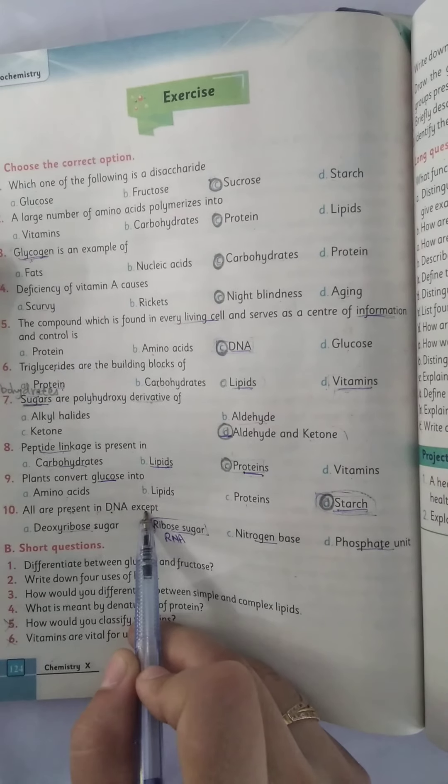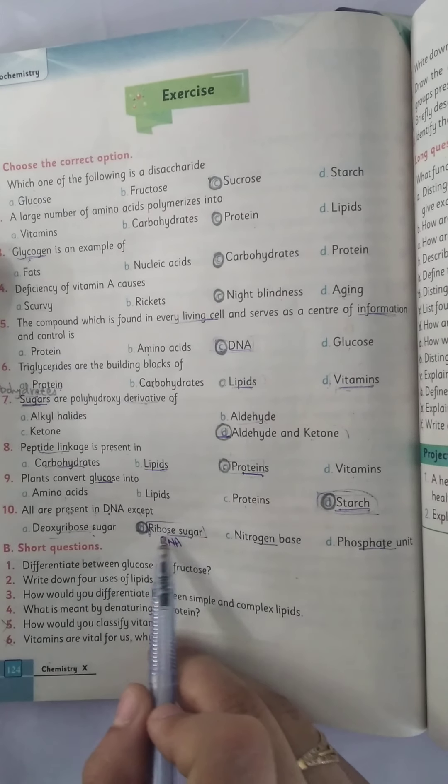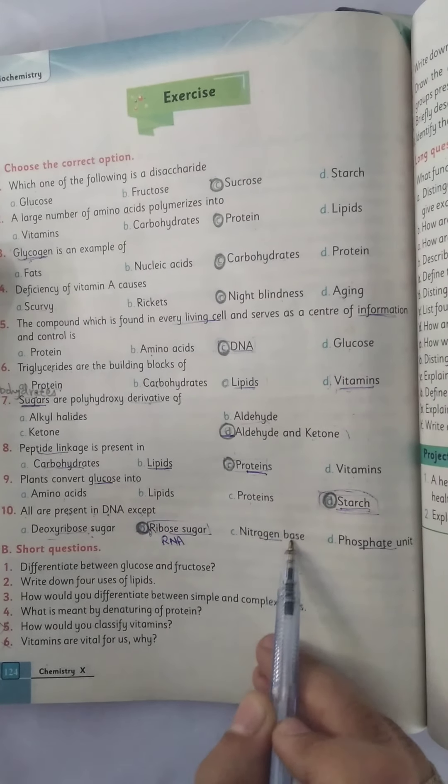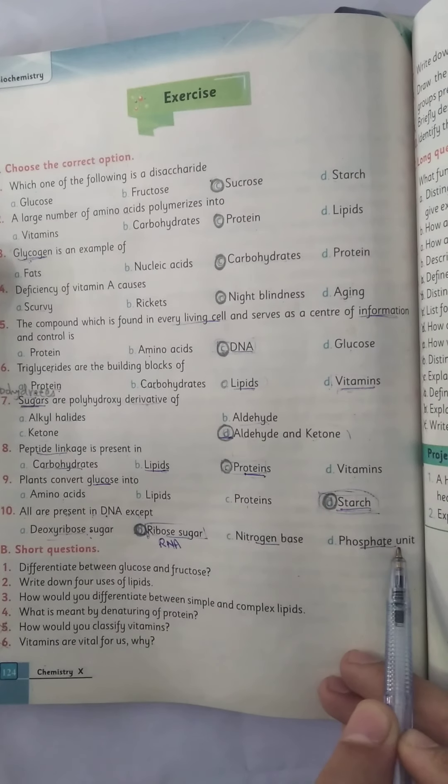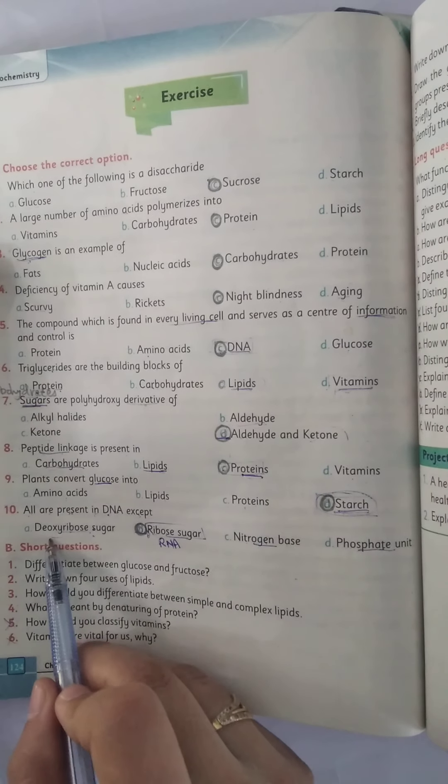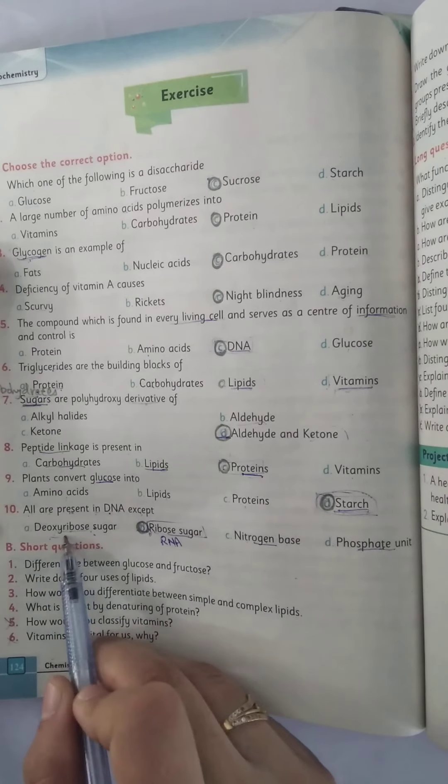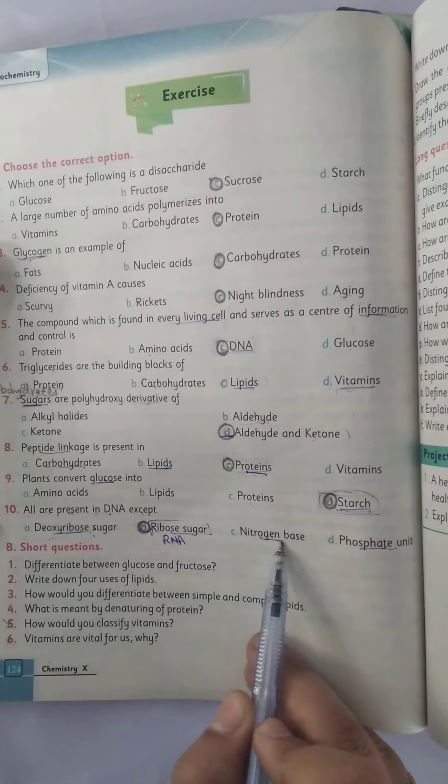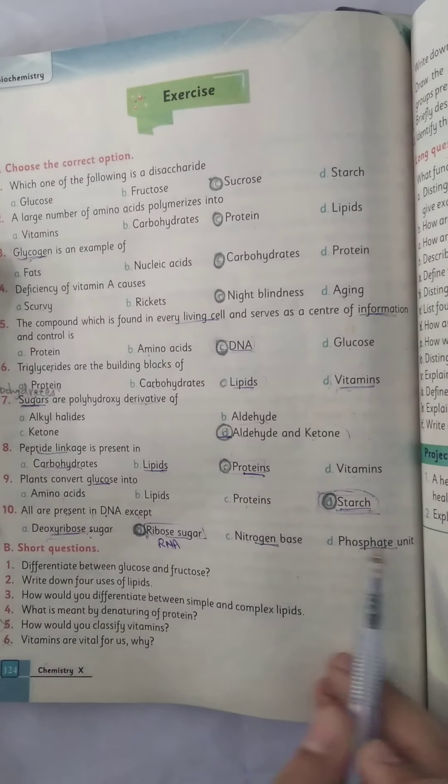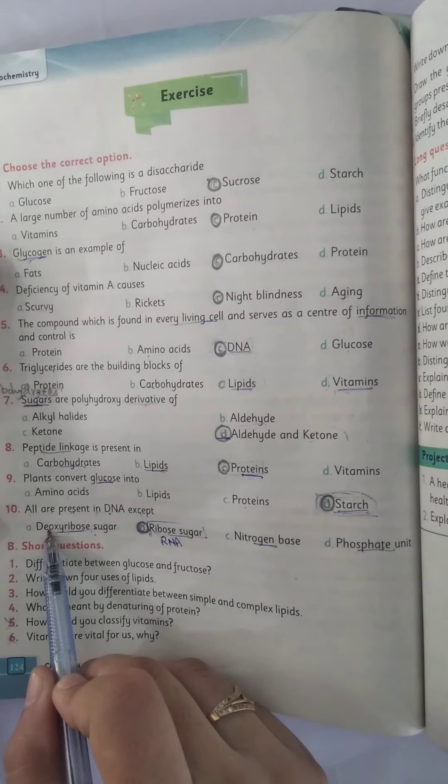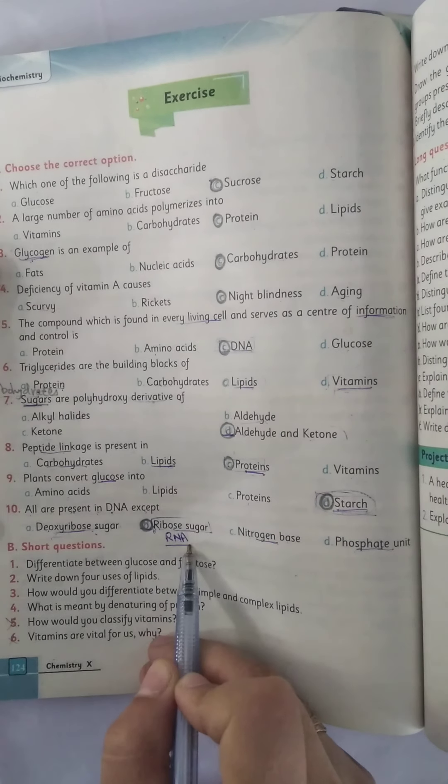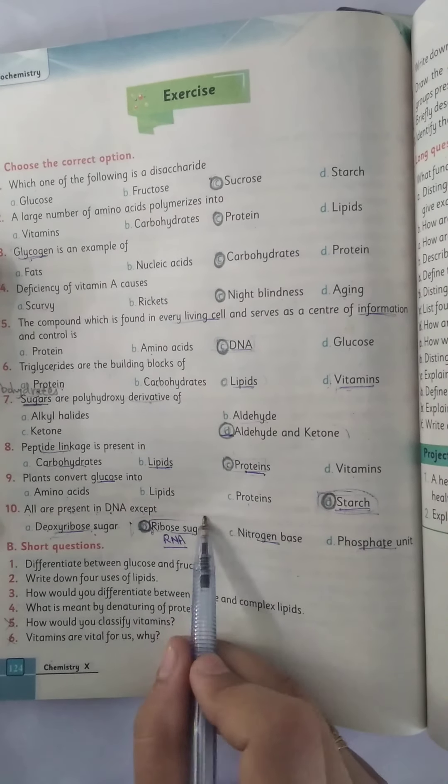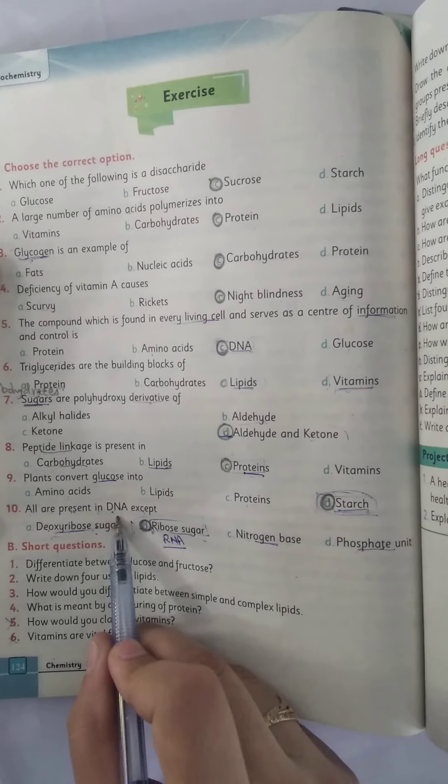All are present in the DNA except deoxyribose sugar, ribosugar, nitrogen base, phosphate unit. As we know that DNA is composed of deoxyribose sugar, nitrogenous base, and phosphate group that collectively form a nucleotide, while ribosugar is present in RNA. So the correct option is ribosugar that is not present in DNA.